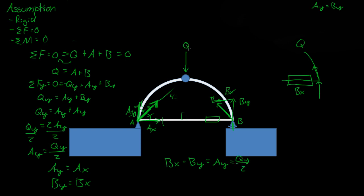And if we remember that Q is going straight down, so then it is equal to QY, because there is no QX. QX is 0. So then, the tension within the beam is just equal to Q over 2.